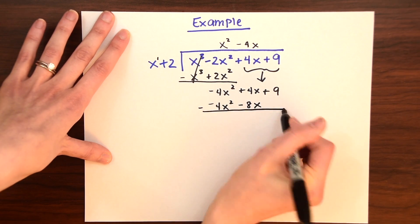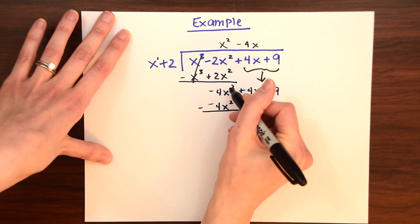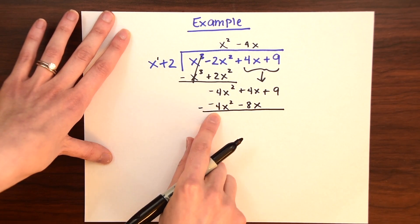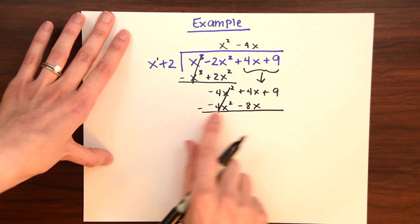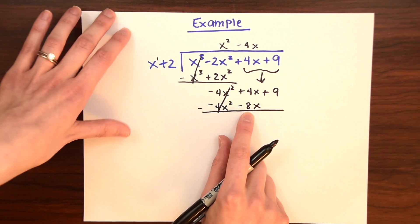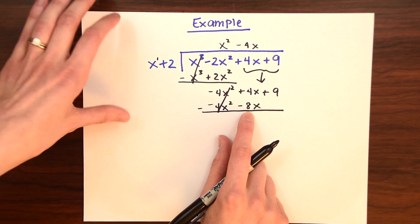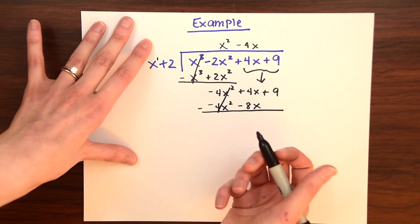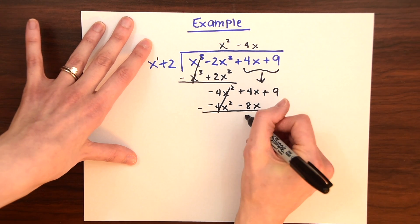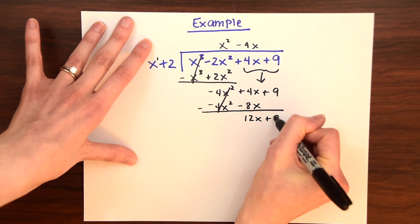Then we're going to subtract these two and see what we end up with. So these cancel out, negative 4x squared minus negative 4x squared, that cancels out. And then we have 4 minus negative 8, which really is like a double negative, so it becomes a positive. So we end up kind of adding 4 plus 8, 4x plus 8x, which gives us 12x plus 9.